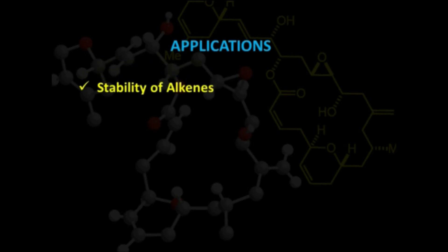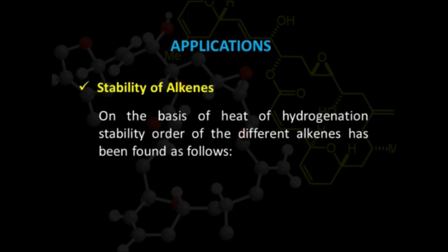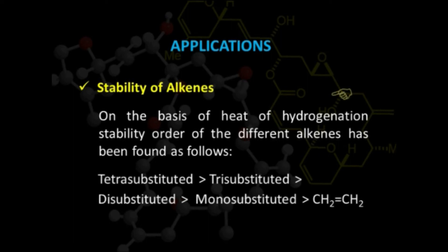Now, what are the applications of hyperconjugation? One of the most important applications is to understand the stability of substituted alkenes. On the basis of heat of hydrogenation, the stability order of different alkenes is: tetrasubstituted alkenes are the most stable, followed by trisubstituted alkenes, followed by disubstituted, and finally unsubstituted alkenes are the least stable. This can be understood with the help of hyperconjugation.